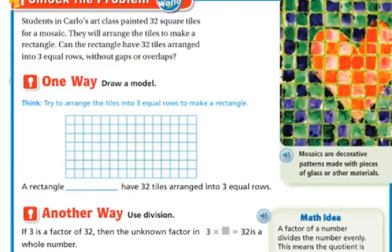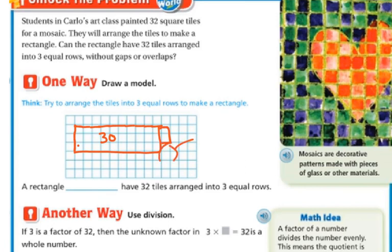Let's draw a model. We want three equal groups, so we're going to go 1, 2, 3. If I go over 1 through 10, I know that's 30 because 3 times 10 is 30. But it's 32, so that would be two more — I'd have a gap right here. So that does not work. A rectangle cannot have 32 tiles arranged into three equal rows.